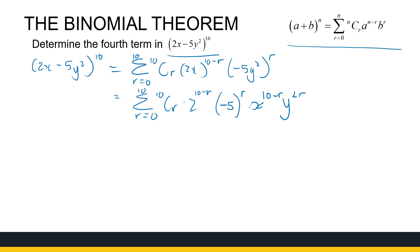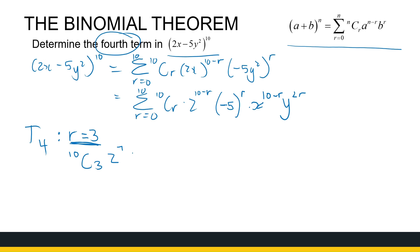Now that it's in a tidier format, let's see what we're asking for — the fourth term. For term 4, what is the value of r? This expansion gives all 11 terms, where the first term has r = 0, the second term r = 1, the third term r = 2, and the fourth term r = 3. So my fourth term is where r = 3. We're no longer looking at the summation — only one specific term: 10C3 times 2^(10−3) = 2^7, times (−5)^3, times x^7, times y^(2×3) = y^6.